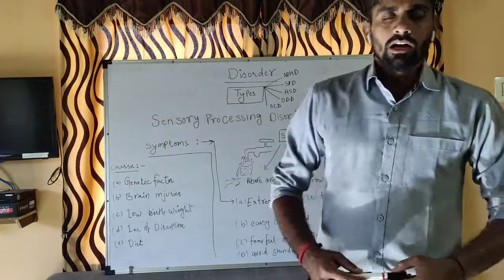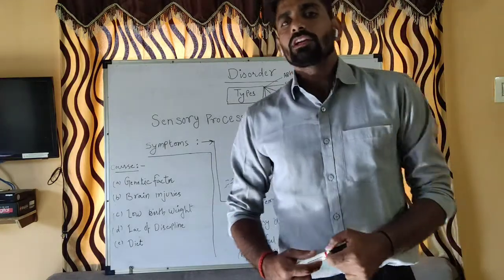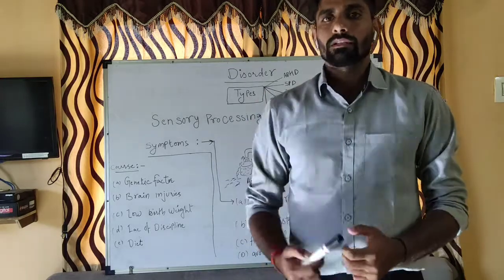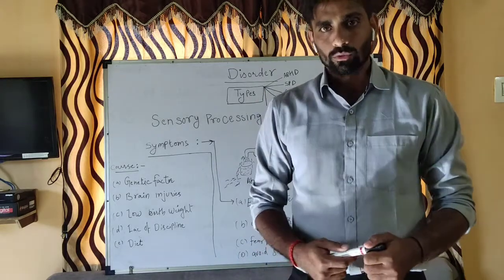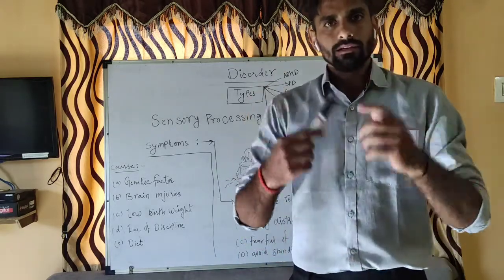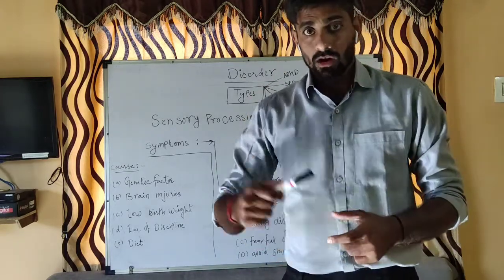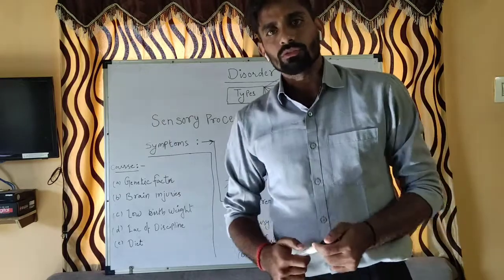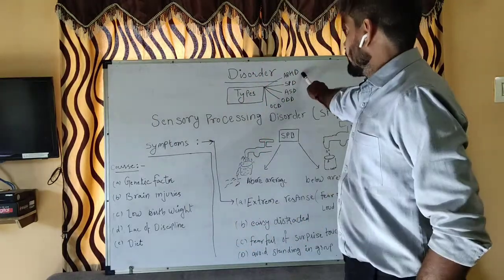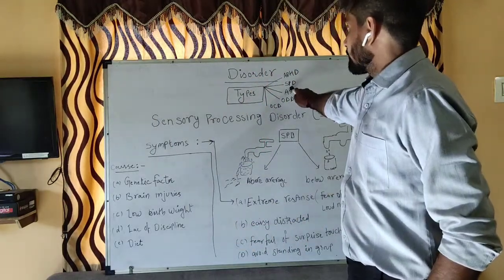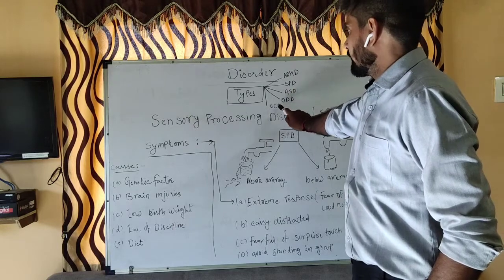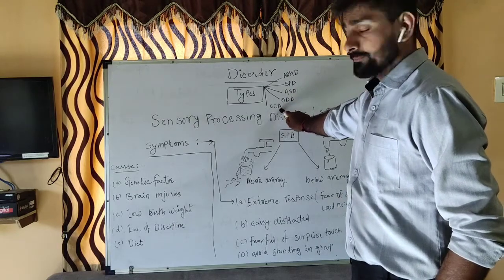Hello class. I am going to take my topic about disorders. Yesterday we learned about disorders — it is mental illness. And the disorders, we have five different types: ADHD, SPD, ASD, ODD, and OCD.